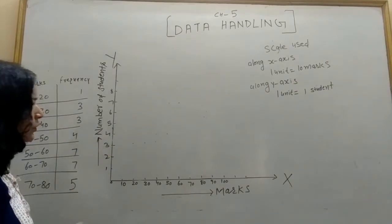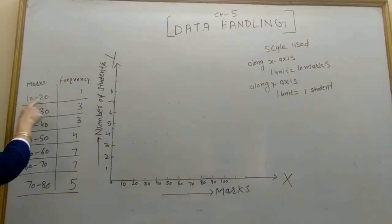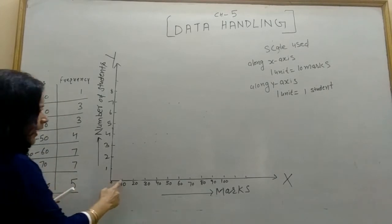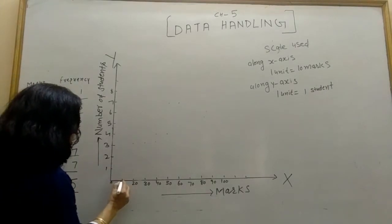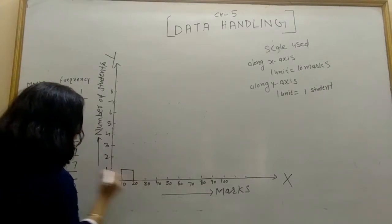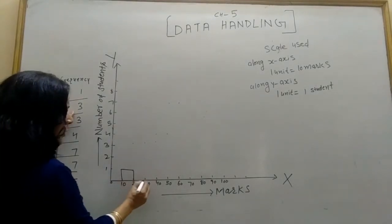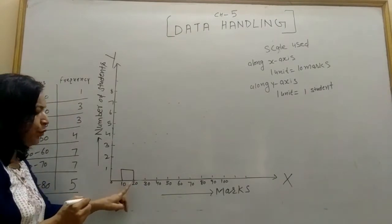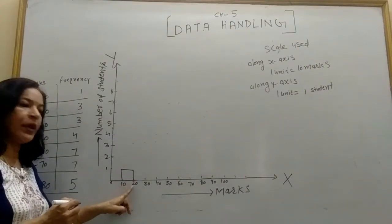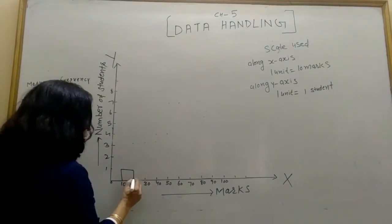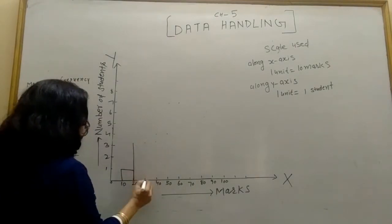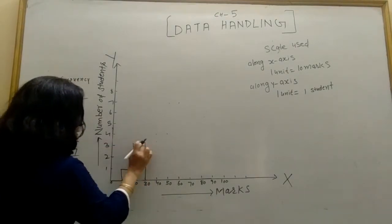10 to 20, one student. Then 20 to 30, three students. This is continuous, so 10 to 20, then no gap, then 20 to 30, three students.